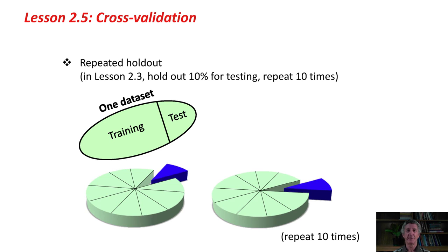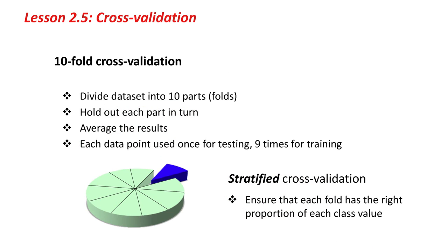In other words, we divide the data set into 10 pieces, and then we hold out each of these pieces in turn for testing, train on the rest, do the testing, and average the results. That would be 10-fold cross-validation. Divide the data set into 10 parts, these are called folds, hold out each part in turn, average the results. Each data point in the data set is used once for testing and 9 times for training.